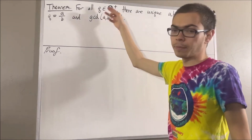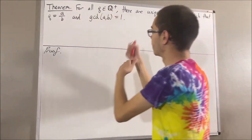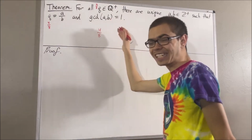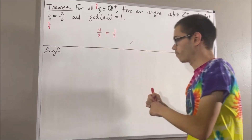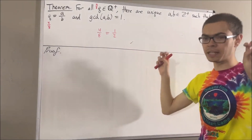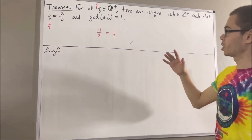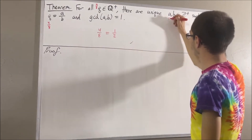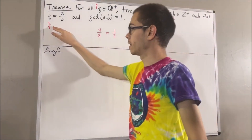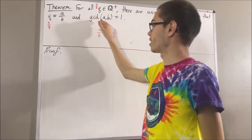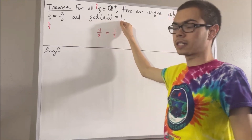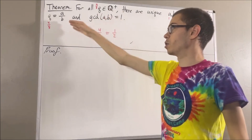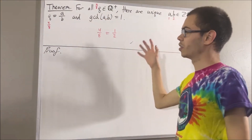For example, if we take Q to be the positive rational number 4 eighths, we know that 4 eighths can be simplified down to 1 half, and 1 half cannot be simplified any further. What we're essentially saying here is that if we take A to be 1 and B to be 2, then 4 eighths is equal to 1 over 2, and the greatest common divisor of 1 and 2 is equal to 1. In fact, 1 and 2 are the only pair of positive integers which satisfy those two conditions.